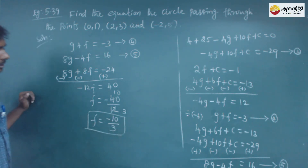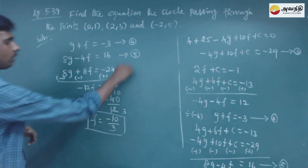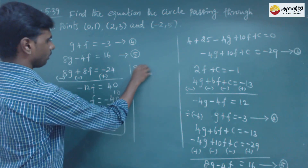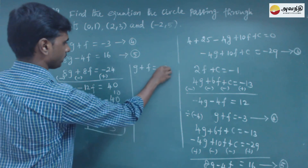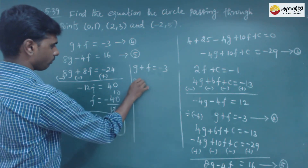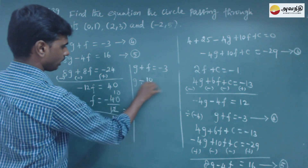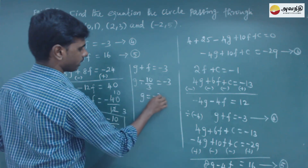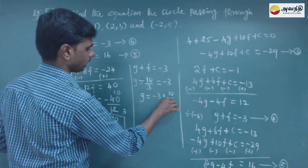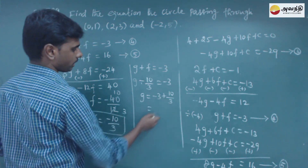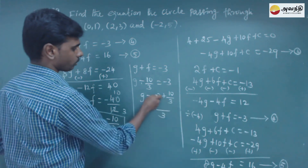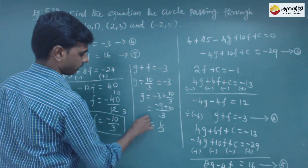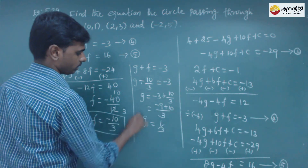Now finding the value of g. Substituting f equals minus 10 by 3 into equation 4: g plus (minus 10 by 3) equals minus 3. So g equals minus 3 plus 10 by 3, which gives minus 9 plus 10 over 3, equal to 1 by 3.